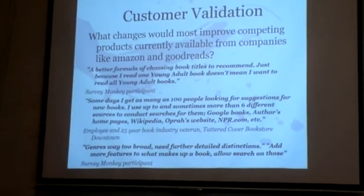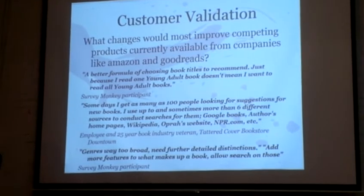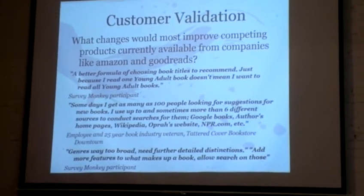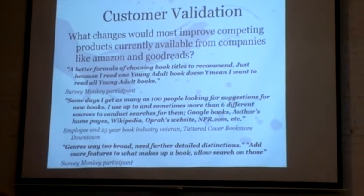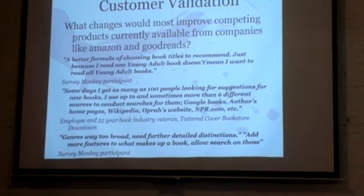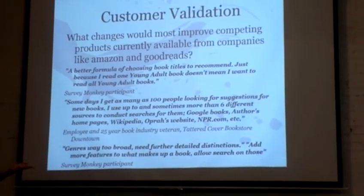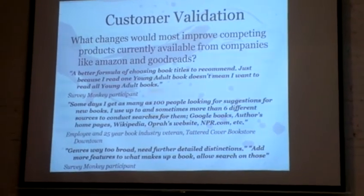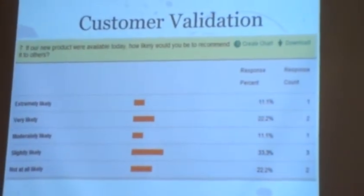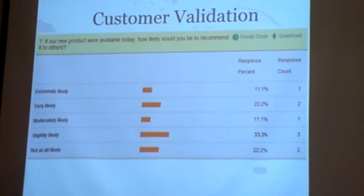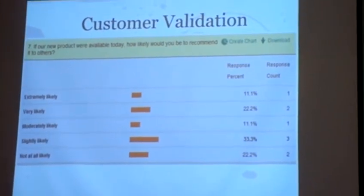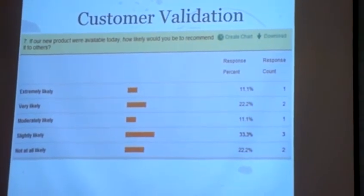We went out and talked to people. We made a SurveyMonkey asking what we can improve on search right now. Our best quote: 'Ways too broad, need further detailed distinctions.' We got that. Another response: 'Add more features to what makes up a book to allow search on notes, location, people, time and place.' We've started integrating that. Our last survey question was whether they'd recommend it to others — 33% said they were very likely or extremely likely. That's great for us.